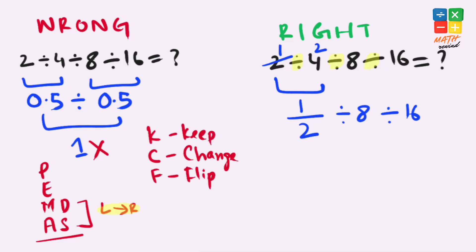Now to make our lives easier, we can apply the KCF rule here. K stands for keep, C is for change, and F is for flip.